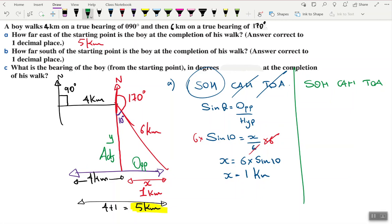So I can use the opposite and the adjacent. I could also use the hypotenuse. I will go with cos theta. So that I can keep it simple. Cos theta is adjacent over hypotenuse. So cos 10 equal to y over 6.